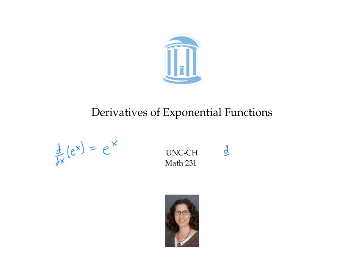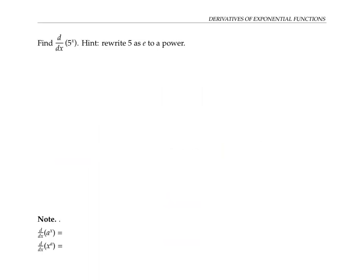But what's the derivative of an exponential function with a different base, like five to the x? One way to find this derivative is to write five as e to a power. So five is the same thing as e to the ln five, where ln is the natural log or the log base e.